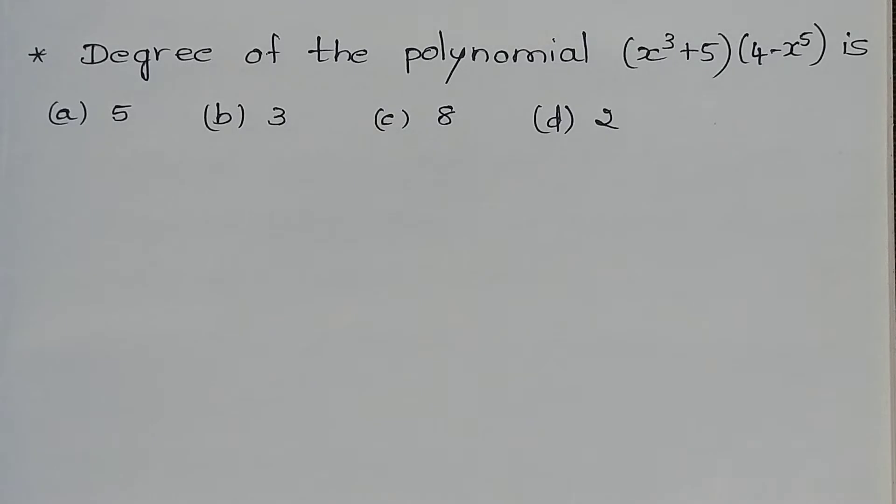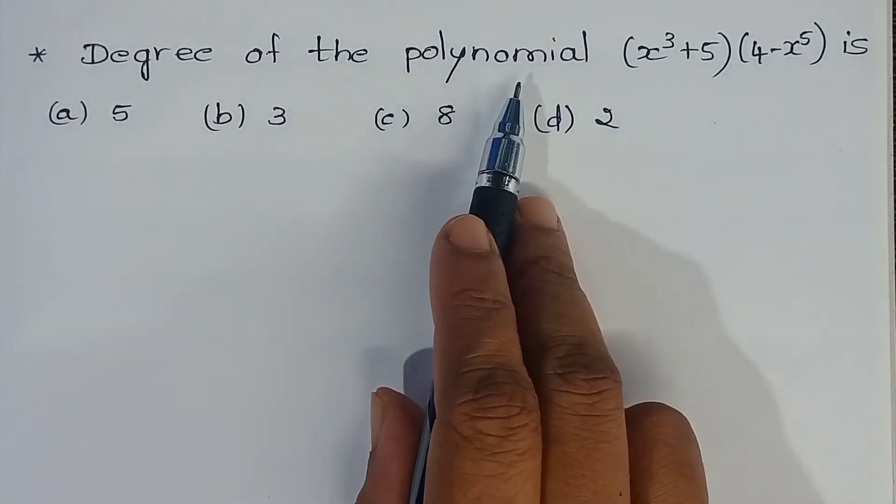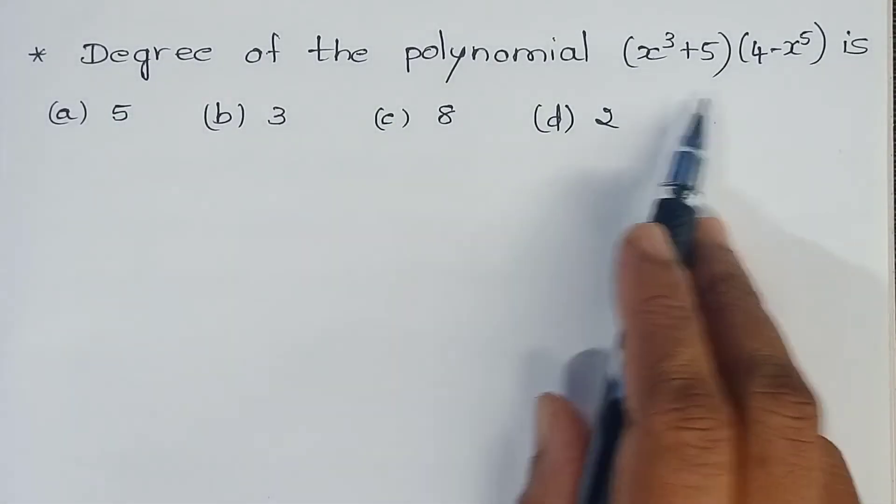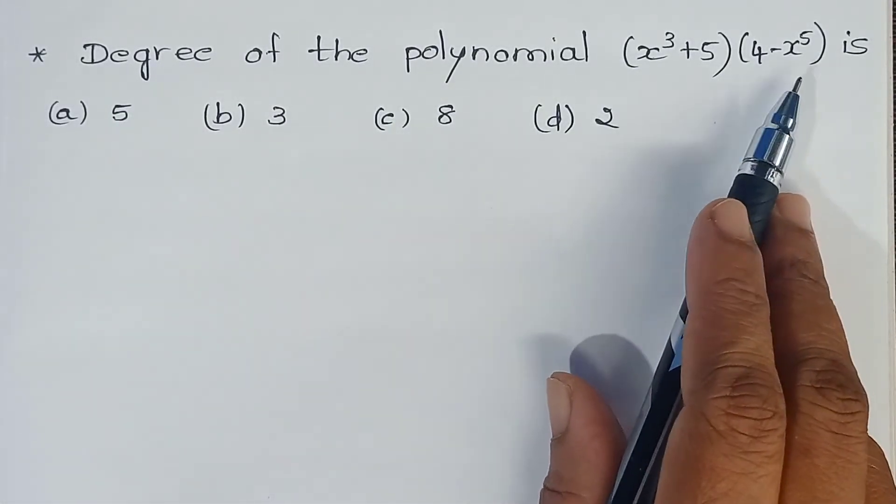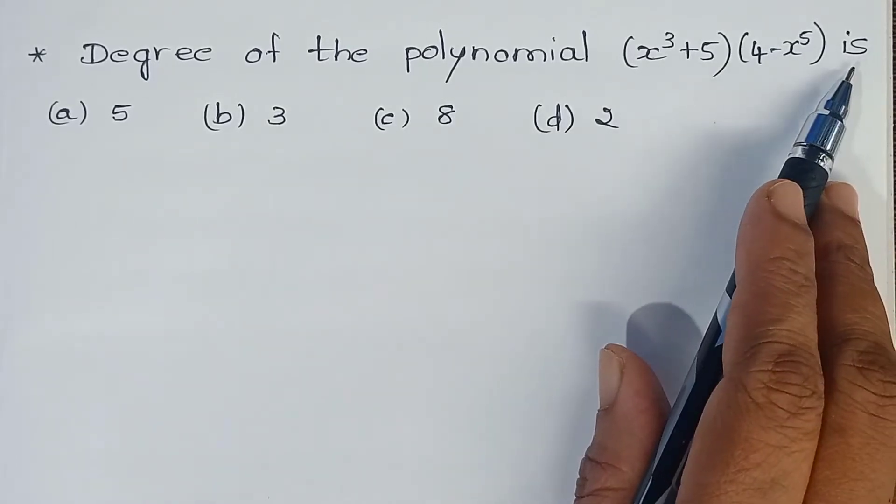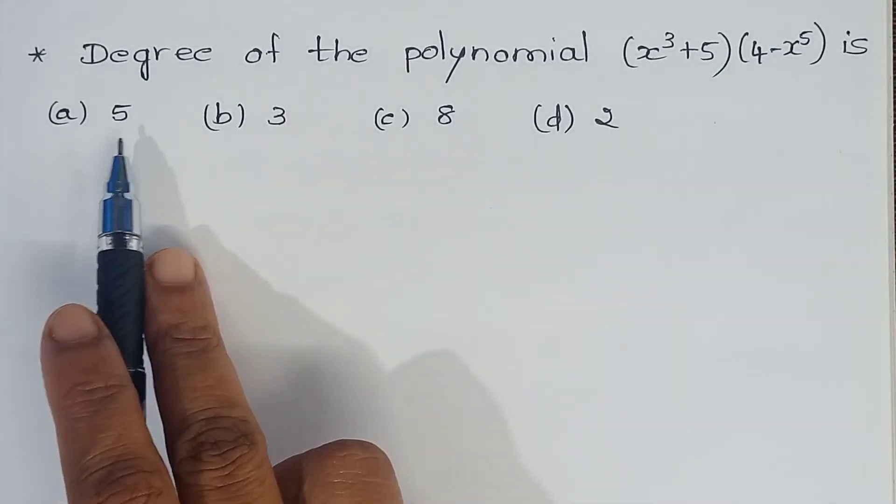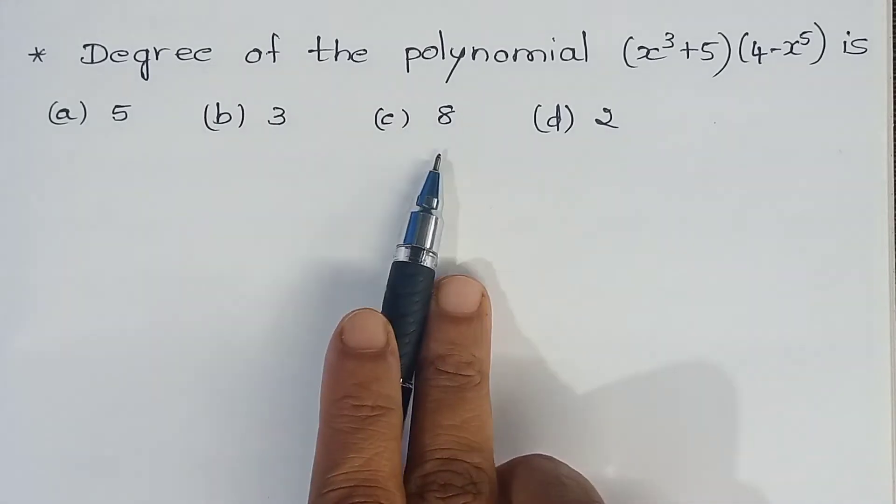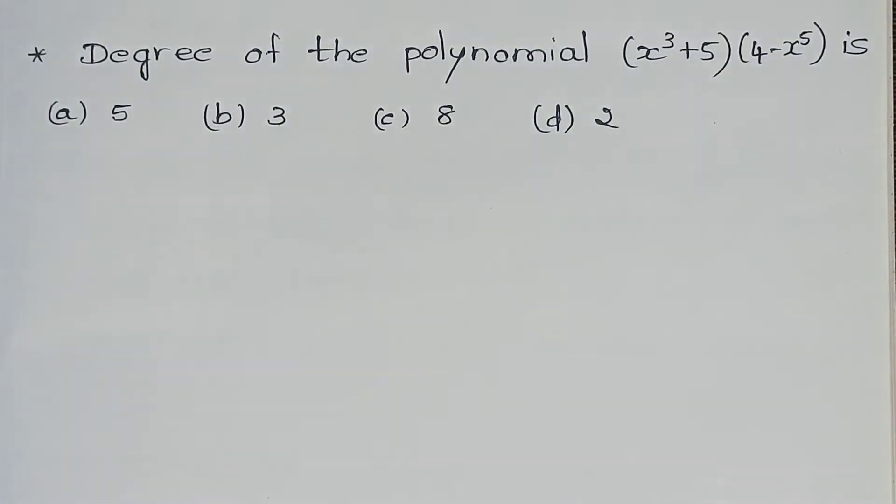Namaste, welcome to Blishon concept teaching. Now let's solve the problem. Degree of the polynomial (x³+5)(4-x⁵) is - and the options are: 5, 3, 8, 2. We have to mark the correct option.